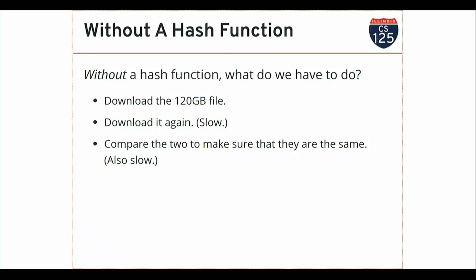Imagine this is like a terabyte file. Gigabytes are not that slow to download anymore, but if this was a big file this could take a while. So you've got to download it again, and then you've got to compare the two — and that comparison is also pretty slow. I essentially have to go byte by byte between these two files to make sure they're identical. The main problem is I have to do the download again, and that's an expensive operation.